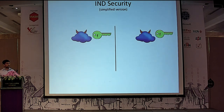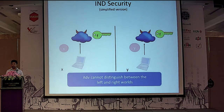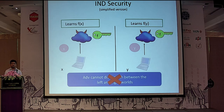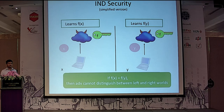What is the security requirement? We call this indistinguishability security. Consider an adversarial cloud with a function secret key for some function f. In the left world, Bob encrypts message x; in the right world, he encrypts message y. We want the adversary to be unable to distinguish the two worlds. But if f(x) ≠ f(y), the adversary can trivially distinguish them via correctness. So we relax the notion: if f(x) = f(y), then the adversary should not distinguish the two worlds. This generalizes to multiple secret keys and ciphertexts with a similar constraint.